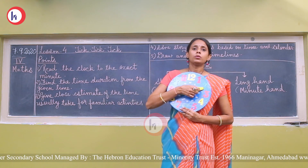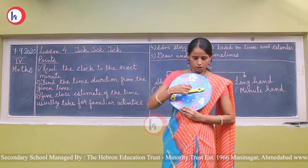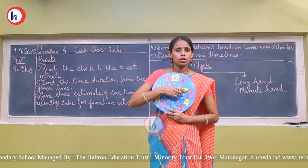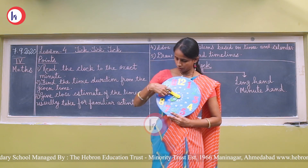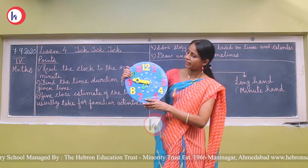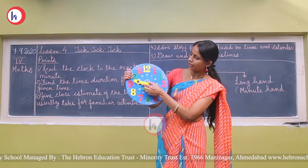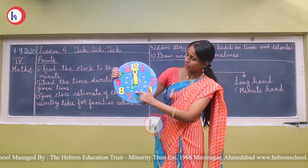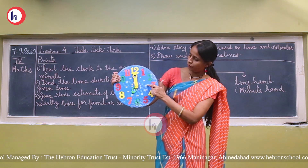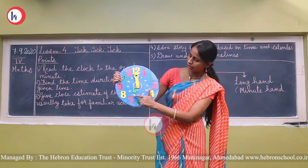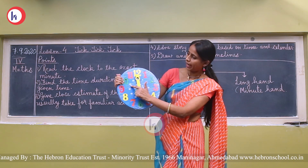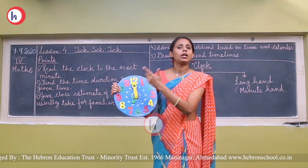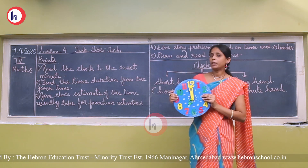Now let us move to the minute hand. It is called the long hand. How can we read the minute hand? The numbers you can see are 5, 10, 15, 20, 25, 30, 35, 40, 45, 50, then 55 and 0. Let us learn about this briefly.